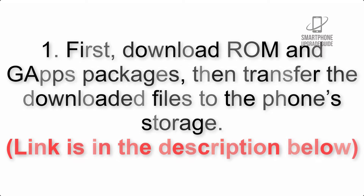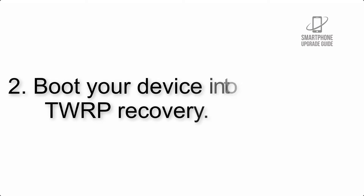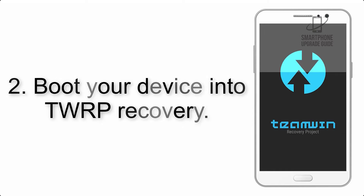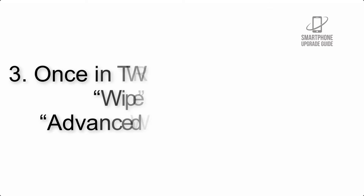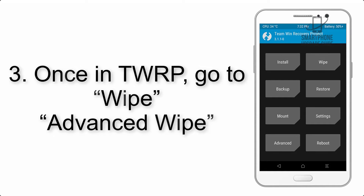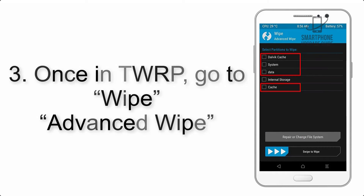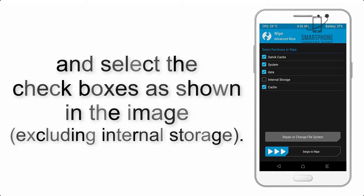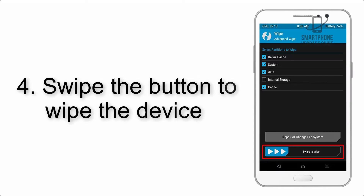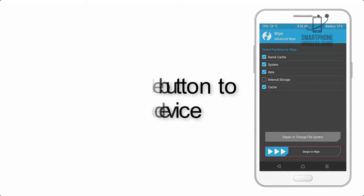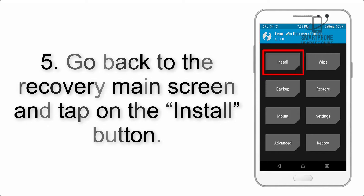Step 2: Boot your device into TWRP recovery. Once in TWRP, click on Wipe, then Advanced Wipe, and select the checkboxes as shown in the image, excluding internal storage. Step 4: Swipe the button to wipe the device.